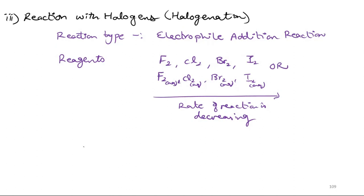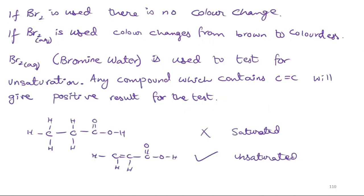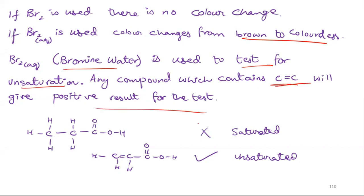Fluorine, chlorine, bromine, and iodine are the halogens used. If you go from fluorine to chlorine to bromine to iodine, the rate of reaction is reduced. If Br2 is aqueous, a color change occurs — brown to colorless. Bromine water is used to test for unsaturation. Any compound which contains a carbon-carbon double bond will give a positive result.